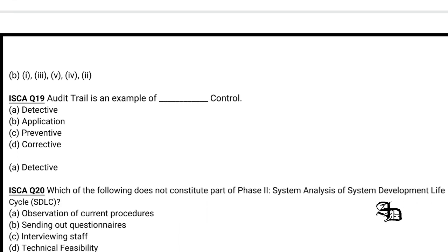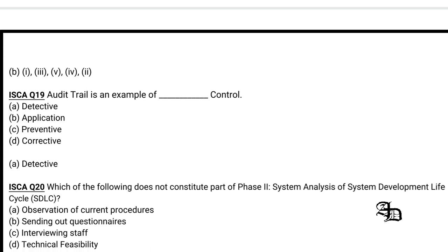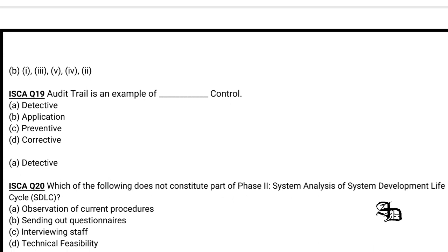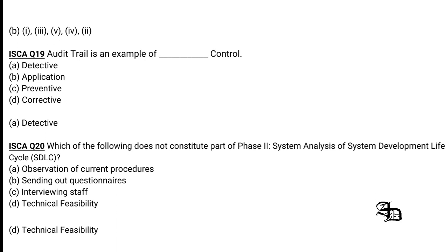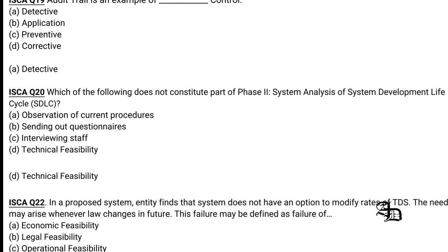Question 8: Which of the following does not constitute part of phase two — System Analysis — of the System Development Life Cycle? Observation of current procedures, sending out questionnaires, and interviewing staff are all part of phase two. Technical feasibility is not part of phase two, so option D is the correct answer.